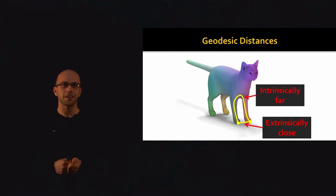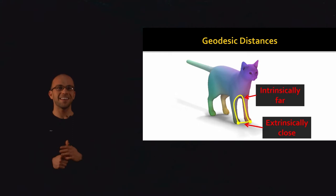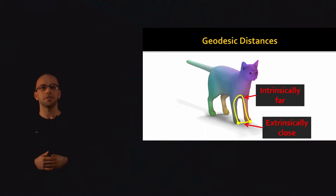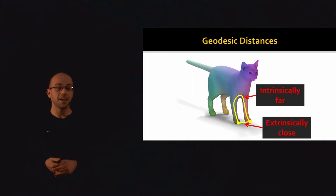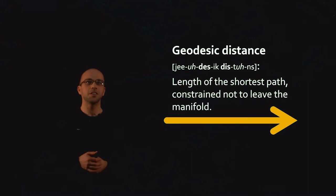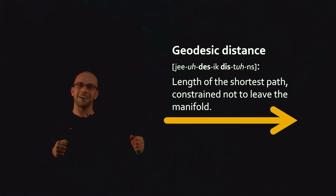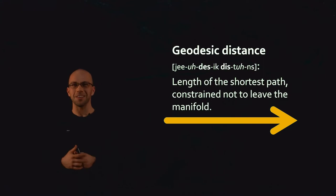In fancy geometry terms, the two front paws of our cat are extrinsically close together — I can draw a short straight line from one to the other. But they are intrinsically far apart: traveling along the surface, I have to move all the way up, across, and back down, which is a relatively long distance. That second notion — the intrinsic notion of distance — is known as geodesic distance. The geodesic distance between two points on a surface or manifold is the length of the shortest path, with the constraint that the path cannot leave the manifold.